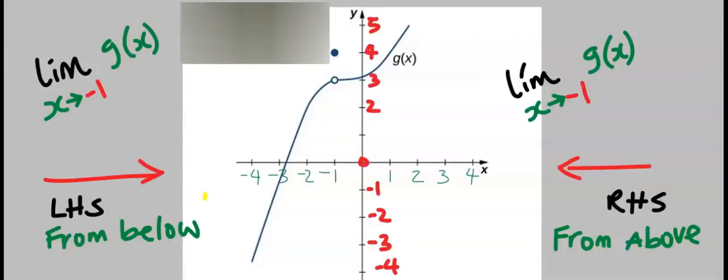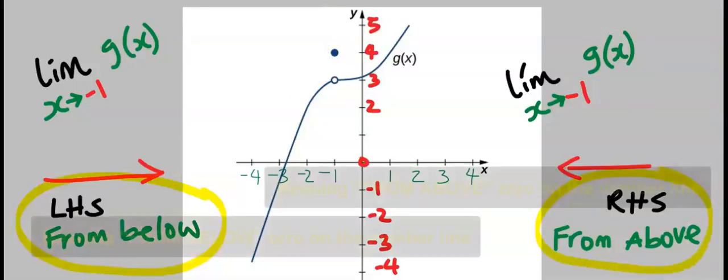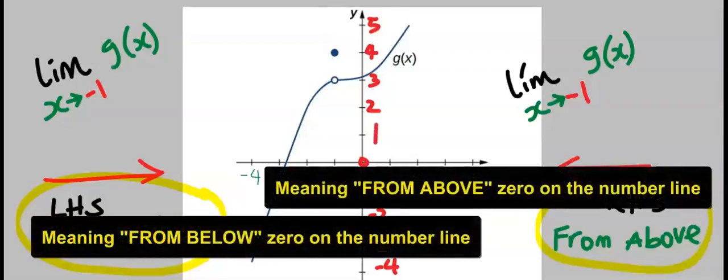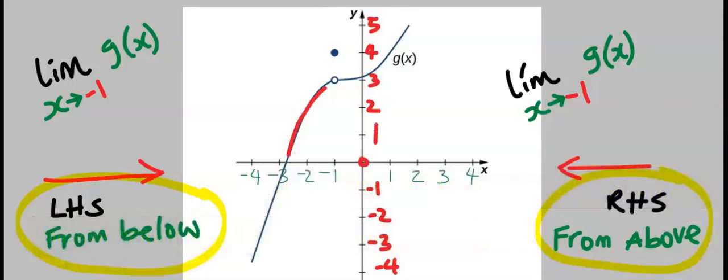Let's consider this question. The left hand limit is also known as from below, while the right hand limit is also known as from above. As we approach g of s from below, which is the left hand limit,